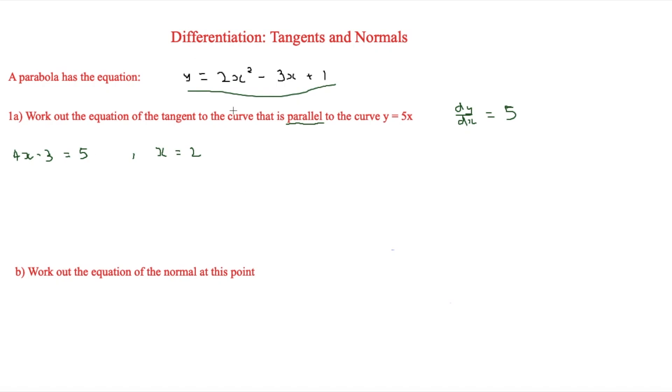Now in order to find y, then we have to sub 2 back in here. So then 2 times 4 is equal to 8 minus 6 plus 1. So therefore, we know that y is equal to 3.